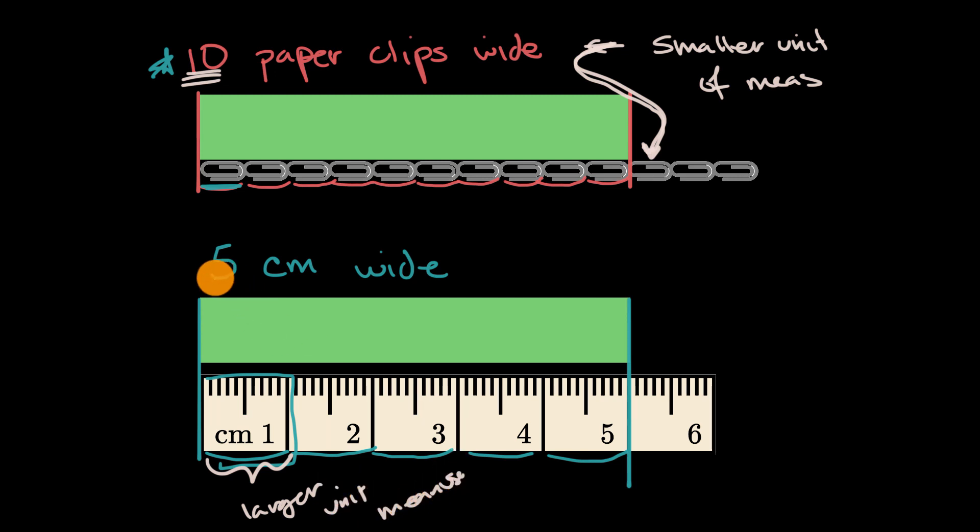We needed fewer centimeters to make up the width of the rectangle than paper clips. So the centimeter is larger. And you could see that visually. If you just look at that width compared to that width, it's clear that a centimeter is wider than this paper clip.